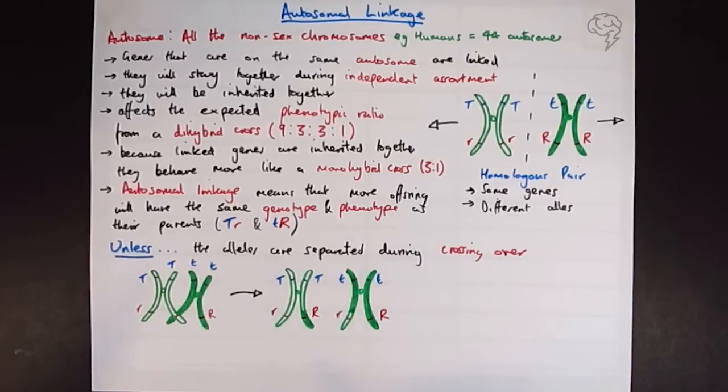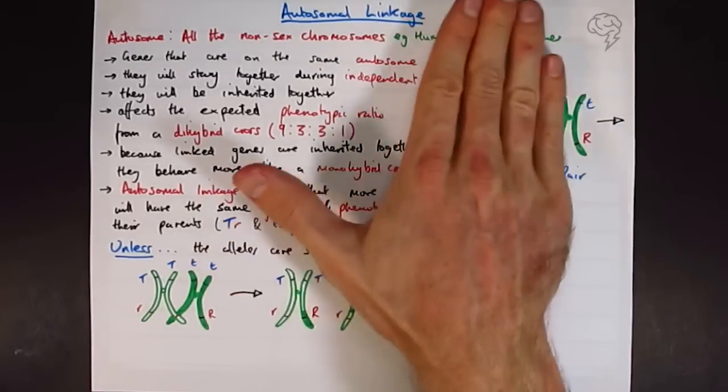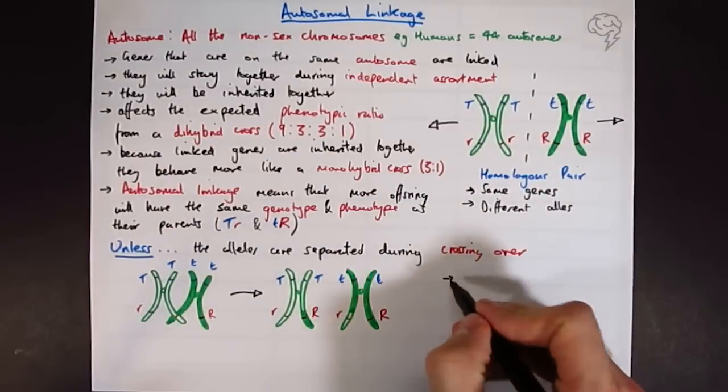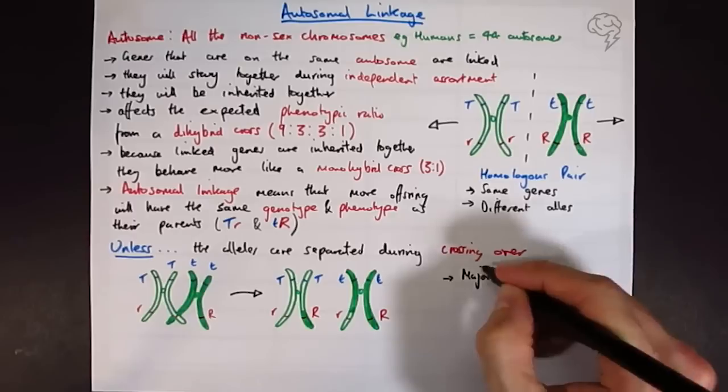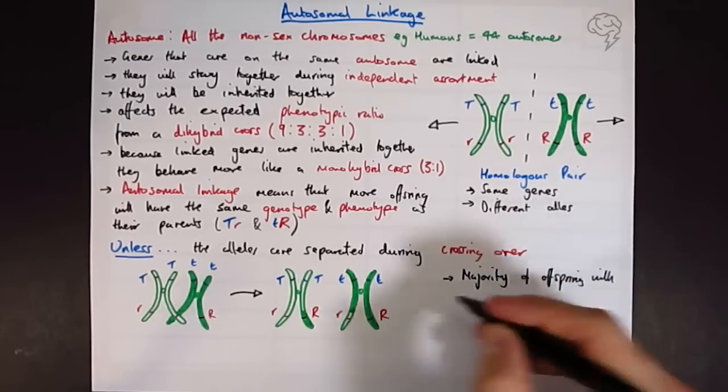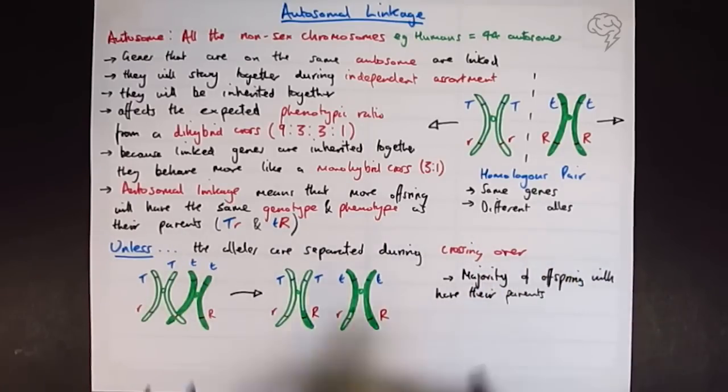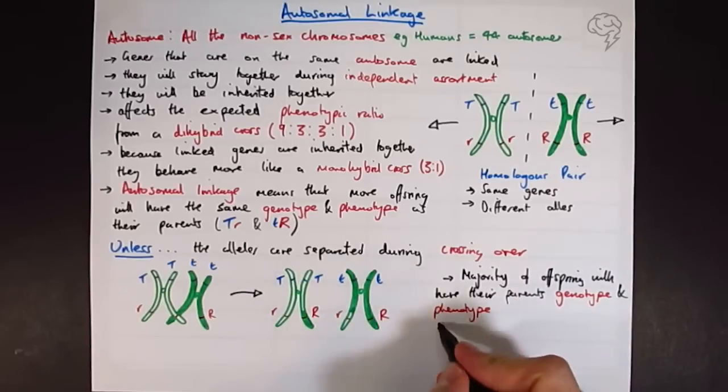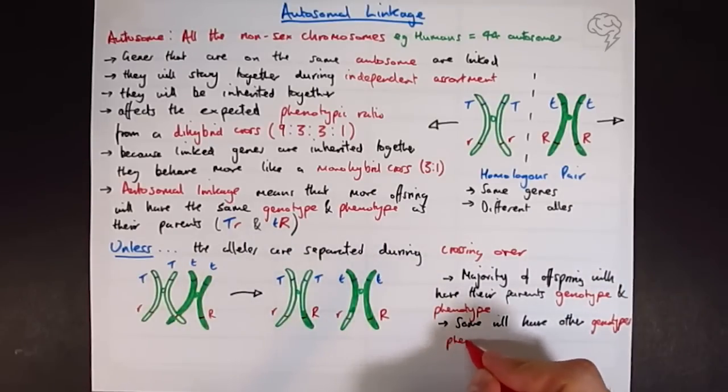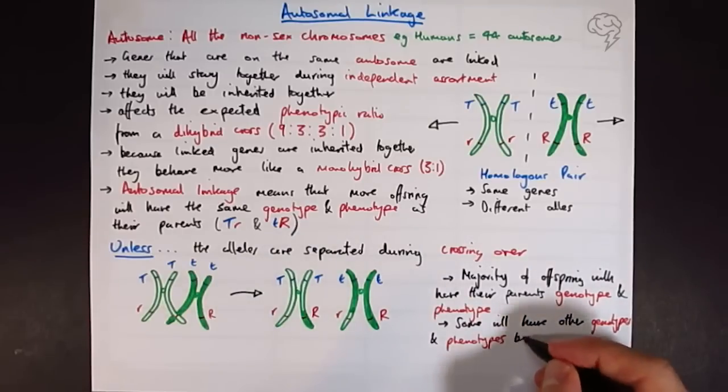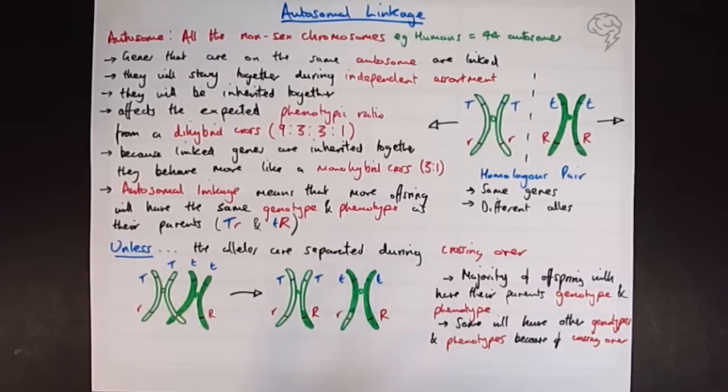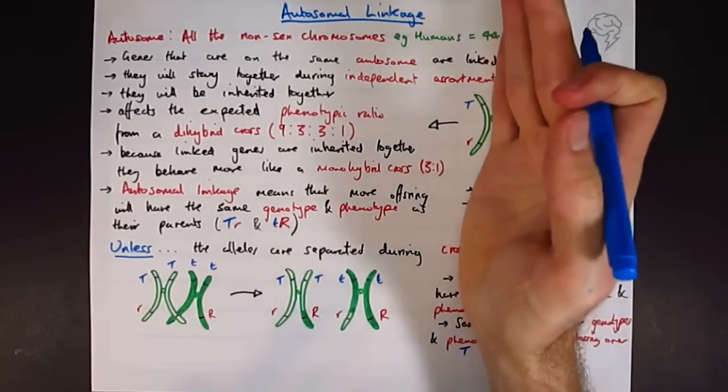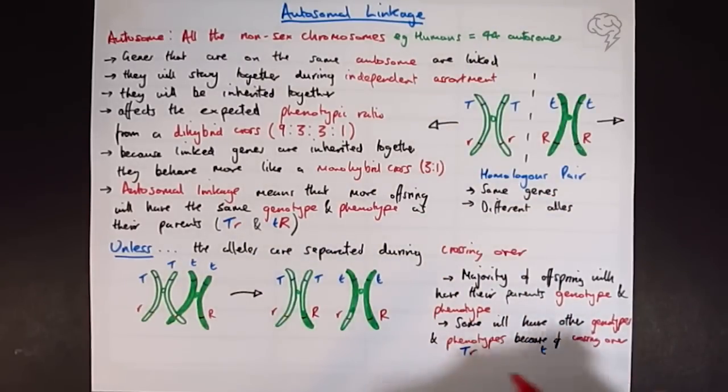So this is before and after crossing over. Now I might put another allele in here, but let's get this nice and clear first. So the reason why normally most of our parents are going to have, we've got this genotype, we've got this genotype. So continuing from that, I'm going to say that the majority of offspring will have their parents' genotype and phenotype. Some will have different genotypes and phenotypes because of crossing over. Okay, so let's put the parents' genotypes in here. So we had big T, little r, and we had little t, big r. These were the parents' genotypes.